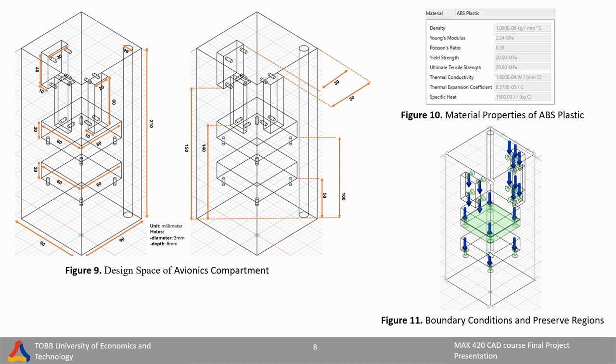In order to create a more compact geometry, and since the Avionics area will be assembled to the rocket from the corners, fixed supports were given to 8 corners of the design space. Since the holes where the electronics carts will be located are very critical, no material discharge was made from these areas. Therefore, these areas were designed as preserve regions. Preserve regions can be seen in Figure 11 in light green color.